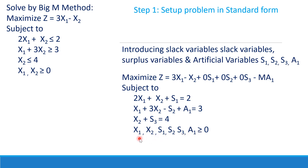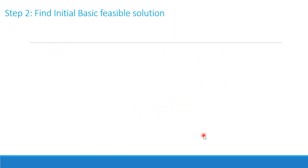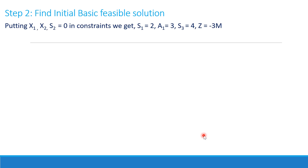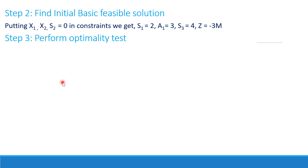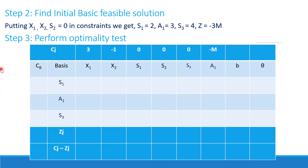The non-negativity condition is x1, x2, s1, s2, s3, a1 ≥ 0. Finding the initial basic feasible solution: putting x1, x2, s2 = 0 gives s1 = 2, a1 = 3, s3 = 4, and Z = -3M. Since M is a large penalty, the artificial variable will be driven out through iteration. We iterate until all values of Cj - Zj are either negative or zero, because this is a maximization problem.